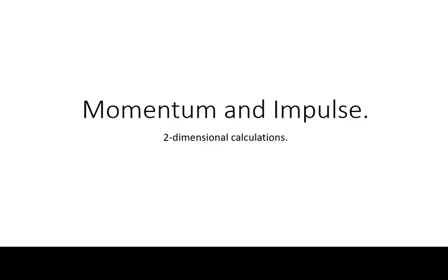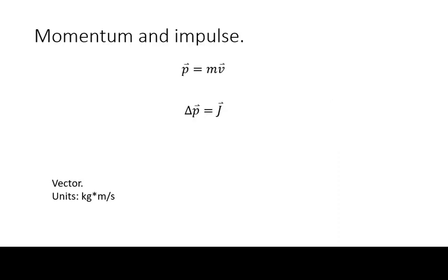Here is how you treat momentum and impulse in two dimensions. Remember that momentum is a vector that is the product of the mass and velocity of an object.